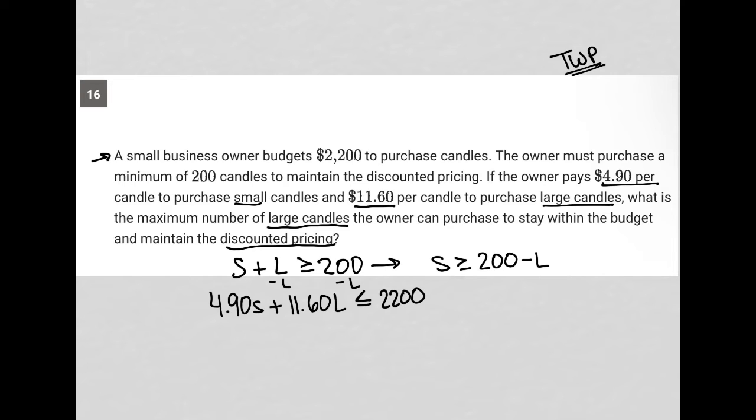And in doing so, I can take this S value, this 200 minus L, replace this S down here with 200 minus L. So I have 4.90 times 200 minus L plus 11.60 L is less than or equal to 2200. And now I have an inequality that only involves the variable L, which is what I want. I want to figure out large candles. So now I'm going to grab my calculator and get to work.